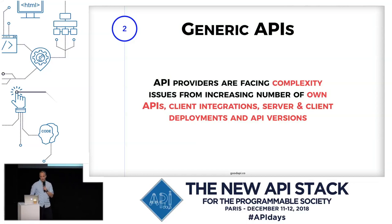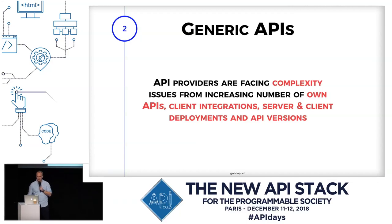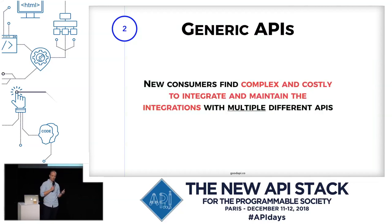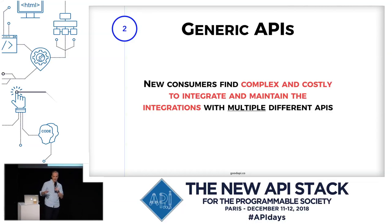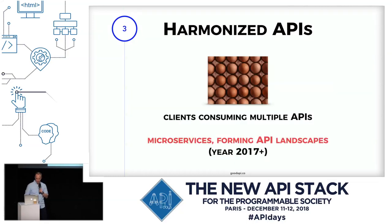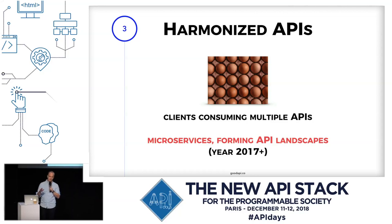Even with these, providers are facing complexity as numbers grow — more client integrations, server-client deployments, and versions. Likewise, clients are now consuming more than one API and facing complexity from the differences between them. The more APIs they consume, the harder it is to maintain those integrations. So we start thinking it might be a good idea to harmonize APIs — making it easier for clients to use multiple APIs.